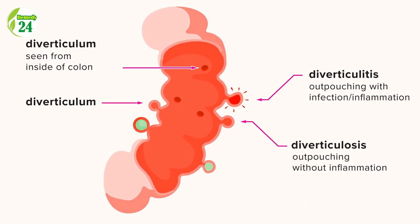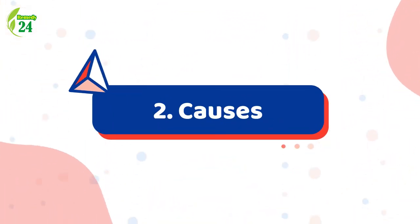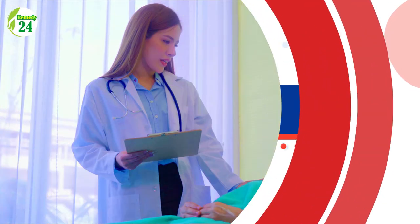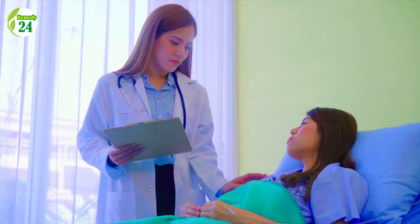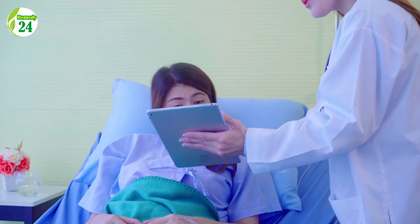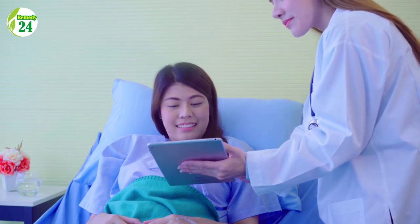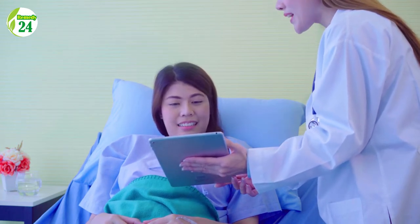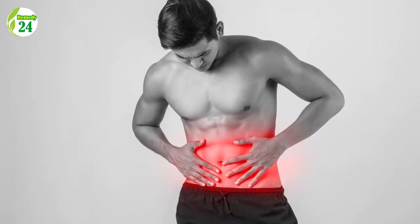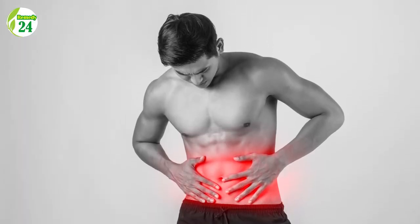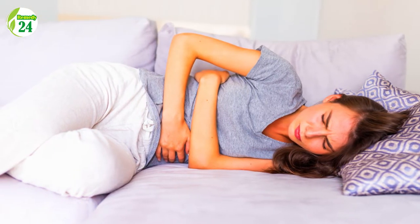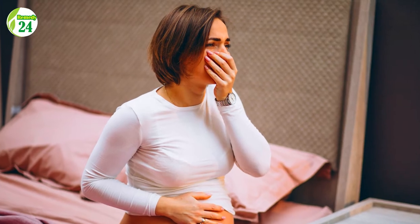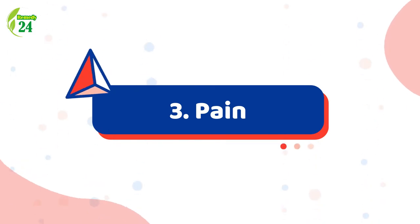The pouches can become irritated at times, and diverticulitis is a condition that, while potentially life-threatening, is also curable. Some parts of the intestinal walls are weaker than others and can give way if too much pressure is applied. As a result, a diverticulum — a small pouch about the size of a marble — may form. These pouches can tear from time to time, causing inflammation and diverticulitis.